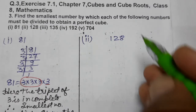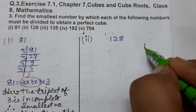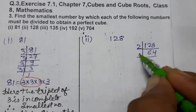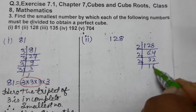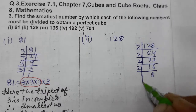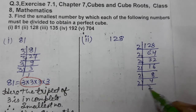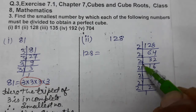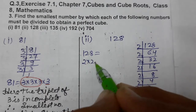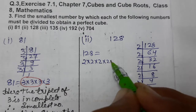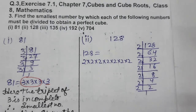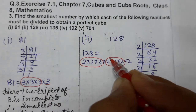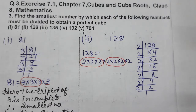Now again we take the prime factors of 128: 2 into 64, 2 into 32, 2 into 16, 2 into 8, 2 into 4, 2 into 2, and 2 into 1. So 128 can be written as 2 taken 7 times: 2 × 2 × 2 × 2 × 2 × 2 × 2.